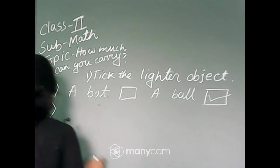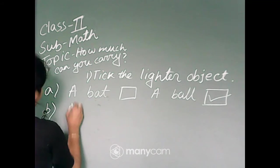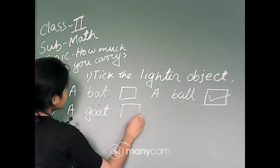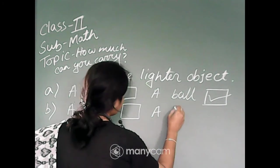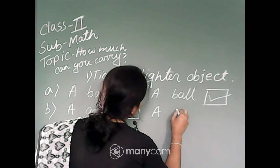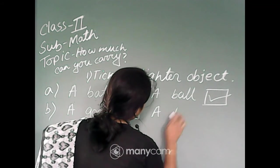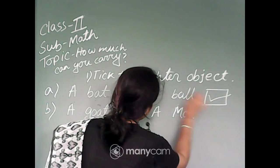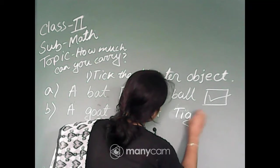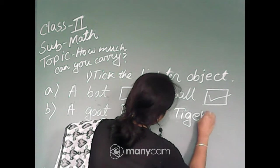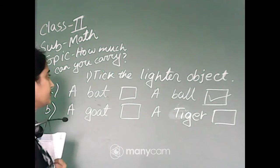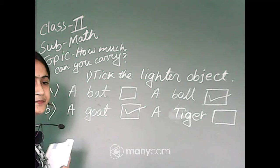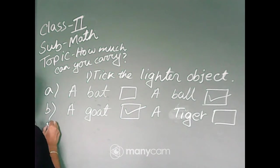Next, number B: a goat or a tiger. A goat or a tiger, lighter object. Goat or tiger? Goat. Goat is lighter than tiger.